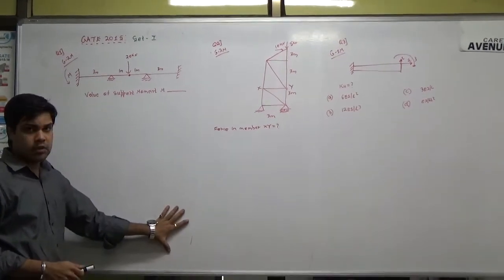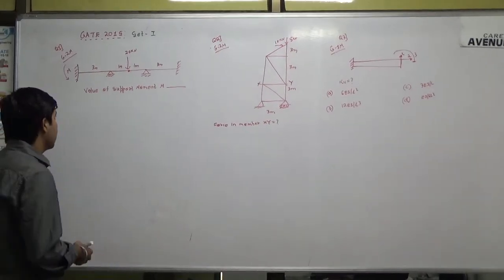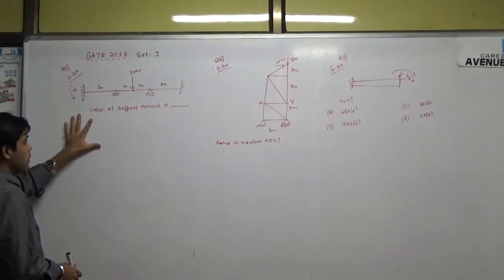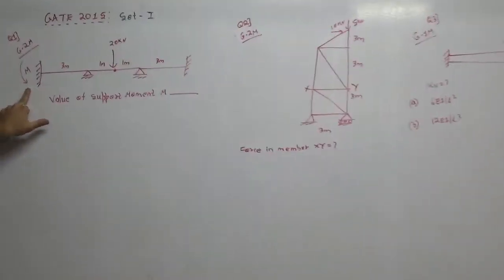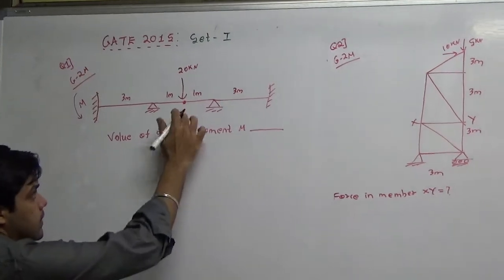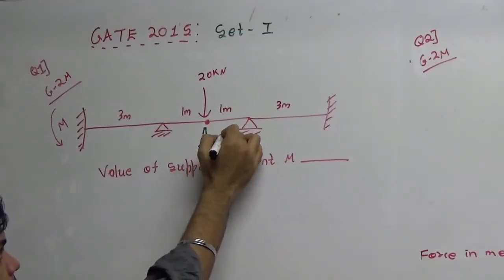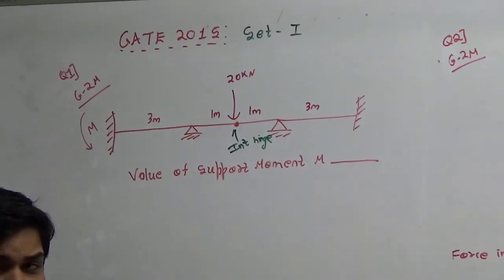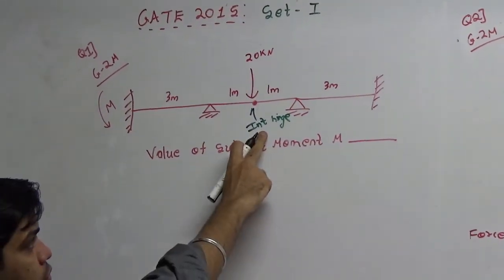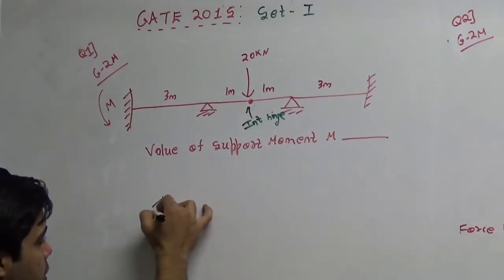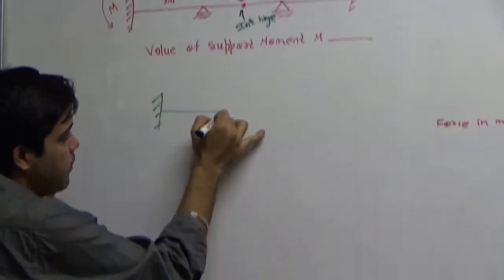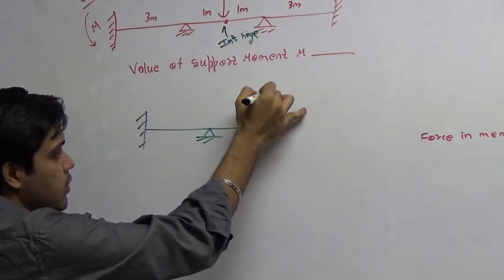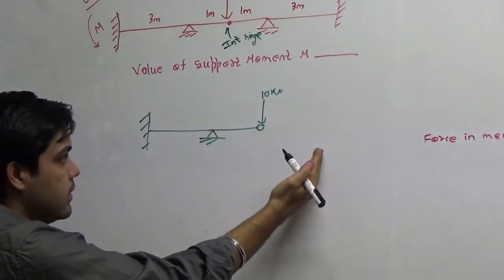I have taken 3 major problems from structures. This is the first problem in which an indeterminate beam is given and it is asked to find the support moment at N. There is an internal hinge, which as explained in the video series on structure analysis, does not transfer moment but transfers shear force. So if I break this beam along the internal hinge, it will transfer 10 kN shear force on the left side and 10 kN on the right side.